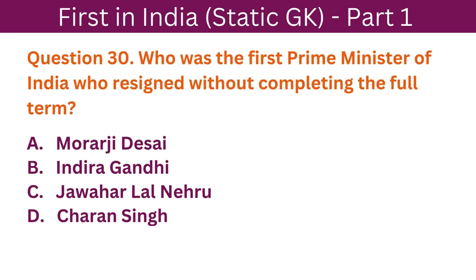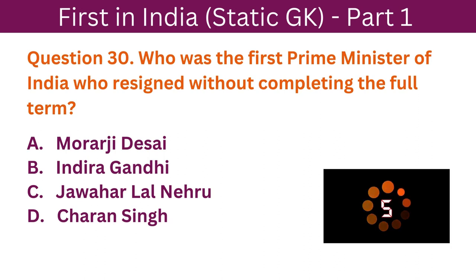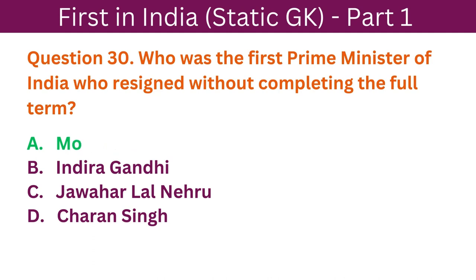Question 30: Who was the first Prime Minister of India who resigned without completing the full term? A. Morarji Desai. B. Indira Gandhi. C. Jawaharlal Nehru. D. Chaudhary Charan Singh. The correct answer is A. Morarji Desai.